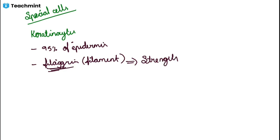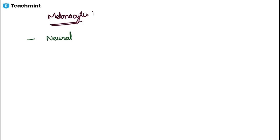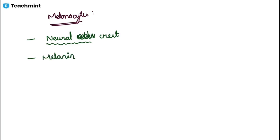The filaggrin in keratinocytes helps in maintaining the strength of the epidermis. Now, melanocytes are very special cells because they are completely originated from the neural crest. In embryology we should know where the cells originate — this melanocyte has a specific origin, which is important for MCQs. These cells arise from the neural crest, and everyone knows that melanocytes produce melanin, which forms the pigment of skin and helps in the protection of skin from UV rays.